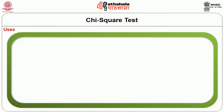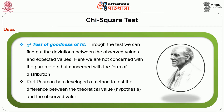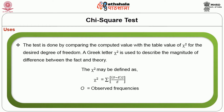Uses of chi-square test. First use — chi-square test of goodness of fit: Through this test we can find out the deviations between the observed values and expected values. Here we are not concerned with the parameters but with the form of distribution. Karl Pearson developed a method to test the difference between the theoretical and observed value. A Greek letter chi-square is used to describe the magnitude of difference between fact and theory. The chi-square formula is: χ² = Σ(O − E)² / E, where O is the observed frequency and E is the expected frequency.